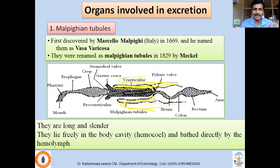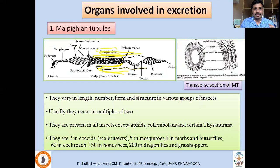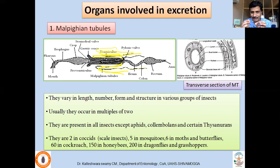Malpighian tubules are very long, slender structures. They are not freely moving in the hemolymph — they are directly bathed by the blood. They will be present at the junction of midgut and hindgut, freely moving. If you take the transverse section of the Malpighian tubules, they have tubes or channels inside, covered by epithelial cells and a basement membrane, and supported by longitudinal muscles so that they are flexible.